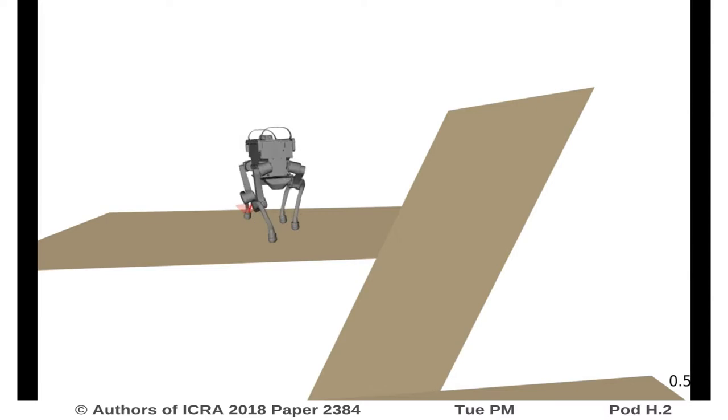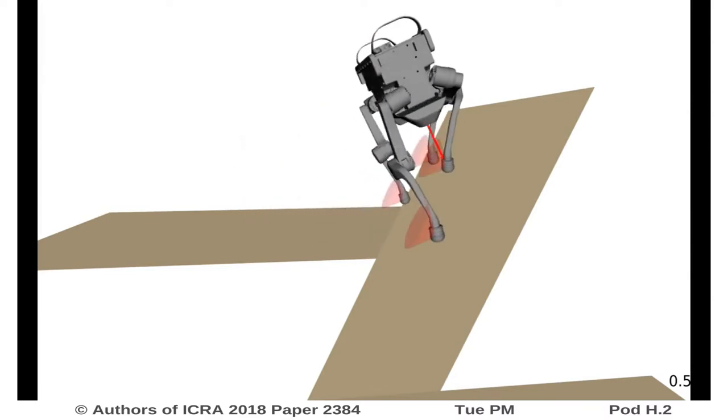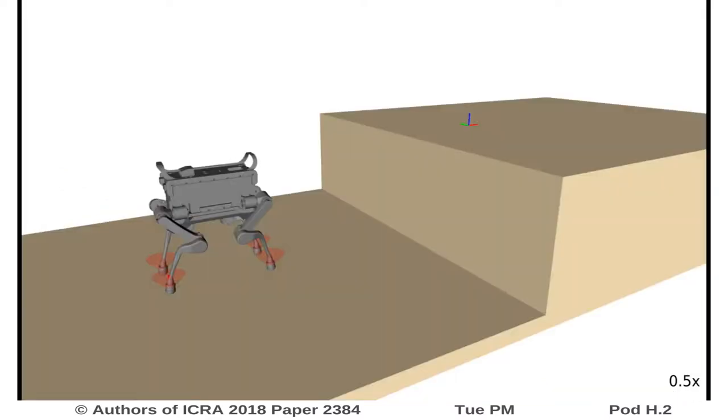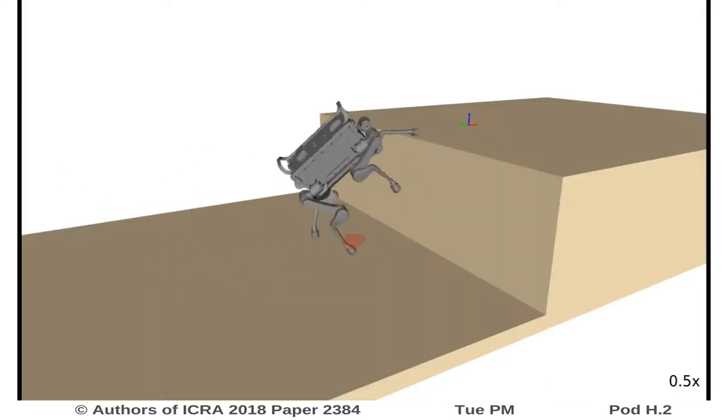In order to avoid slipping, the contact forces must lie inside a cone defined by the terrain and the friction coefficient. This requires the motion to be adapted to work with only the restricted range of possible contact forces.